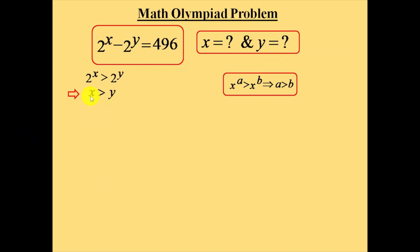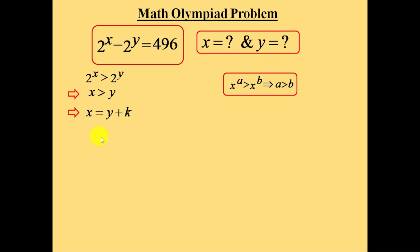So x is greater than y. Let the difference between x and y be k. Then we can write x as the sum of y and k: x is equal to y plus k, where k is the constant difference between x and y. Now substitute the value of x as y plus k in the equation provided to us.